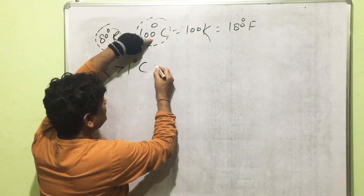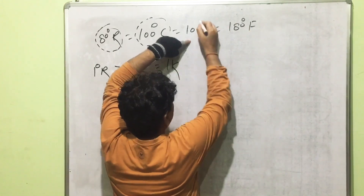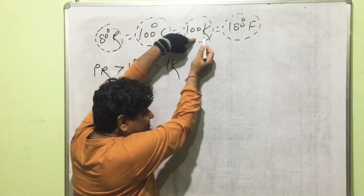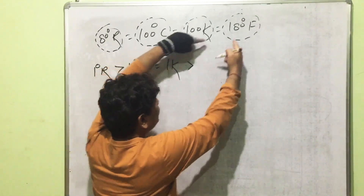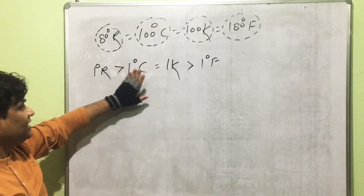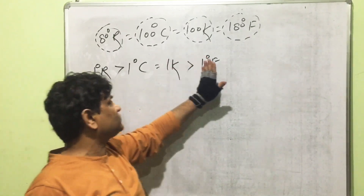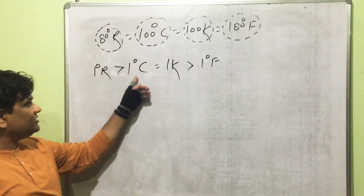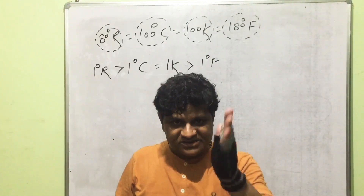Comparing Kelvin (100 divisions) with Fahrenheit (180 divisions): Kelvin has fewer divisions in the same length, so the length of one unit is more on the Kelvin scale than on the Fahrenheit scale. Summary: length of 1 unit on Réaumur > Celsius = Kelvin > Fahrenheit. The two scales with the same length of one unit are the centigrade scale and the Kelvin scale, since 1°C = 1 K.